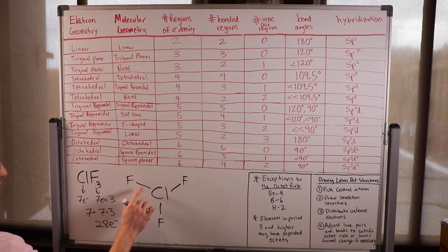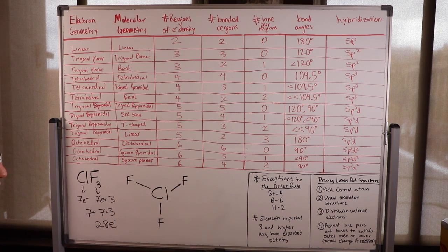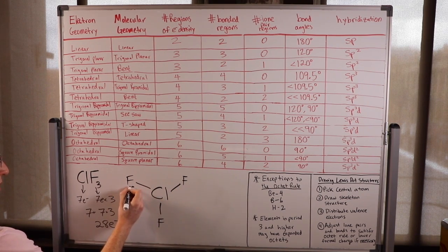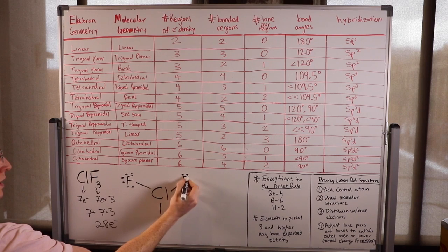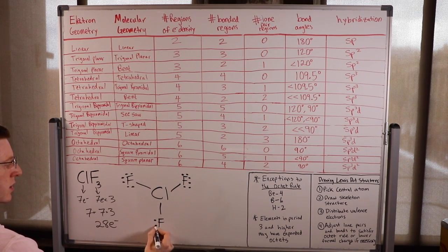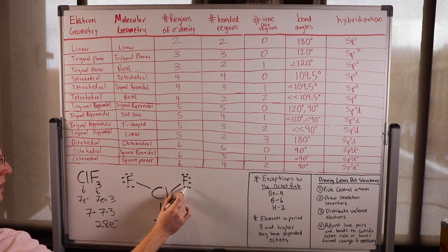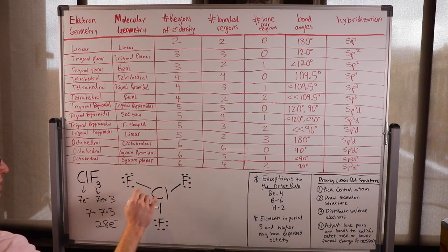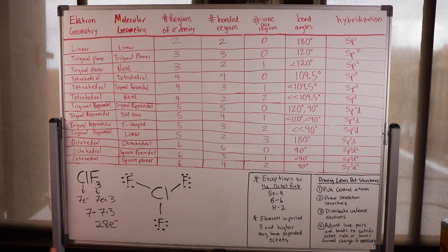I've already used six electrons for these three bonds, so I've got 22 left. I'll start filling up the octets of the outer fluorine atoms. We use six on each fluorine to fill their octets — six times three is 18 — plus six for the bonds, so we've used 24 total.